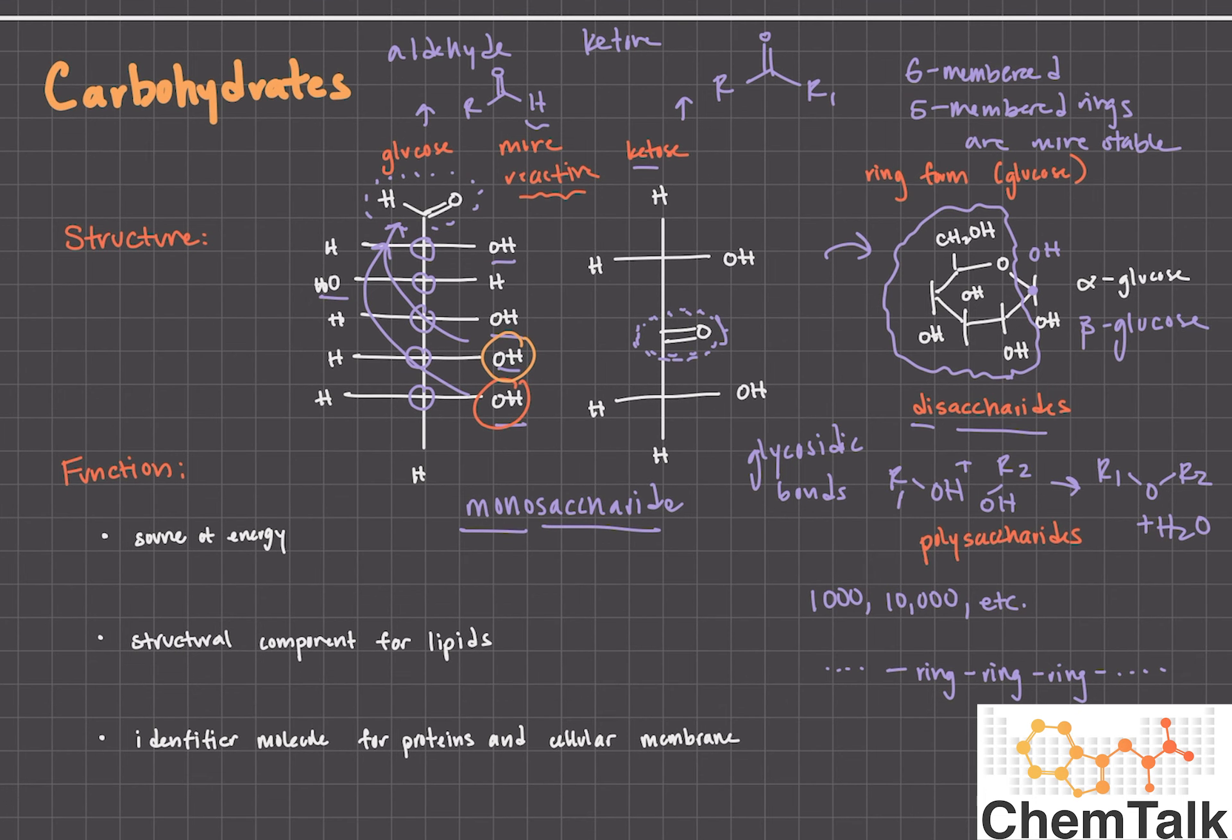Just knowing the structure is not as important as actually knowing the function as well. Carbohydrates are a really good source of energy. When you're on a long hike and you feel really tired, you take out a Nature Valley bar. Those things are chock full of carbohydrates. They help fuel you for the rest of the hike because the energy is really fast. It gets burned really fast and you get the energy really quickly. Another component is the structural component for lipids. And I'll go into more detail when we go to cover the lipids section. And, finally, it's also an identifier molecule for proteins and cellular membrane. I'll cover that when I go to protein and cellular membrane as well.